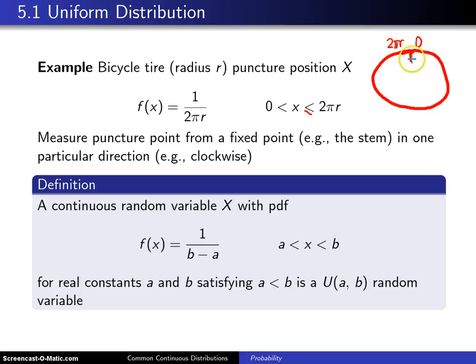And because of that, its distribution should reflect the fact that it is equally likely all the way around the tire. Of course, in a continuous, not a discrete fashion. And that's what the uniform distribution takes care of. It takes care of a random variable that is uniformly distributed between two values.